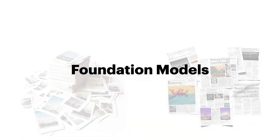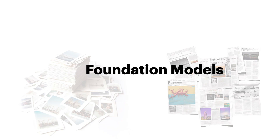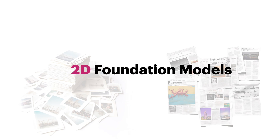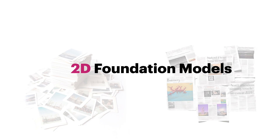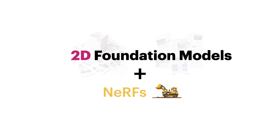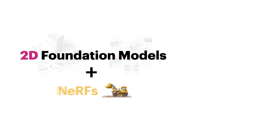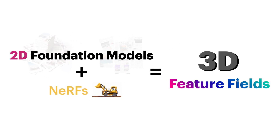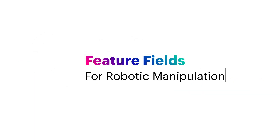Our key idea is to leverage foundation models trained on internet-scale datasets, which embed common-sense understanding of the world from two-dimensional images. We combine these foundation models with neural radiance fields, or NERFs, to lift these two-dimensional features into 3D. We call this general approach Feature Fields for Robotic Manipulation, or FIRM.